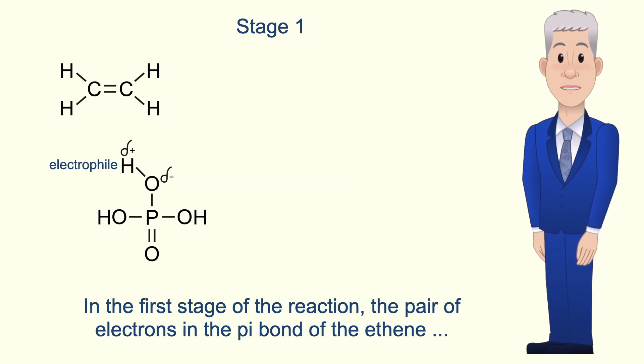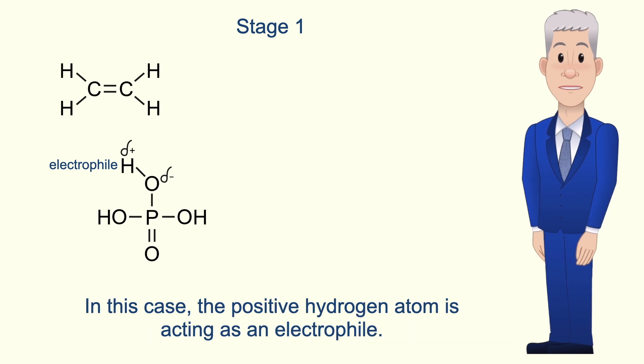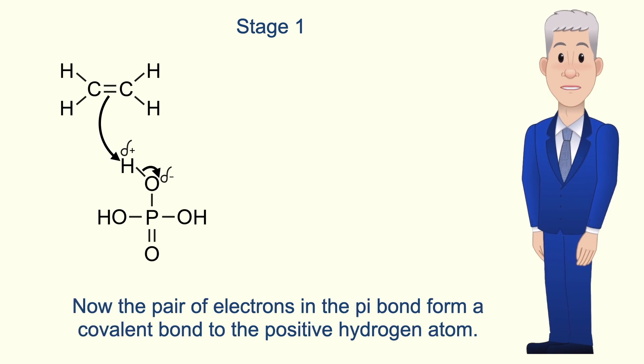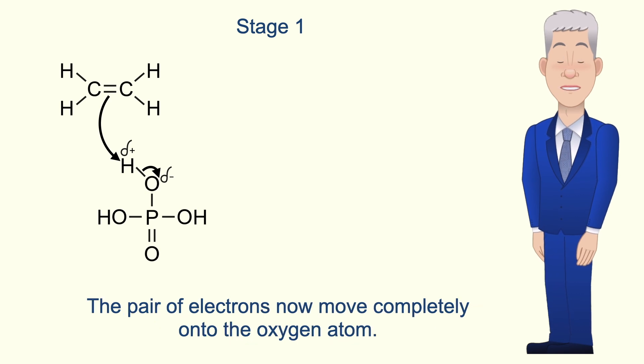In the first stage of the reaction the pair of electrons in the pi bond of the ethene are attracted to one of the positive hydrogen atoms in the phosphoric acid. The positive hydrogen atom is acting as an electrophile. The pair of electrons in the pi bond form a covalent bond to the positive hydrogen atom. At the same time the covalent bond between the hydrogen and oxygen breaks and the pair of electrons now move completely onto the oxygen atom.